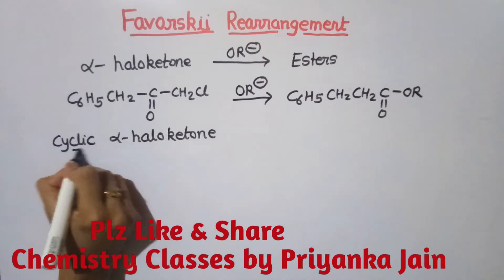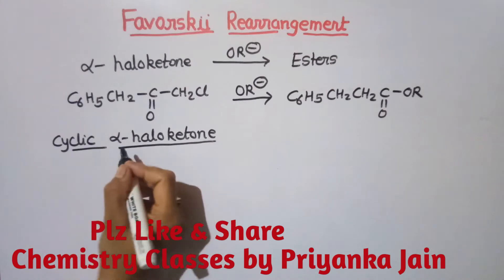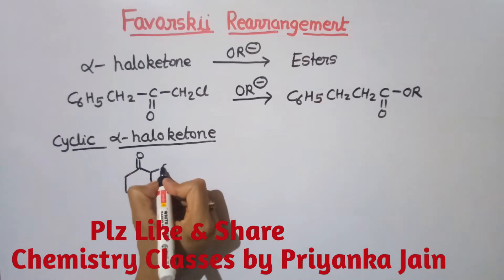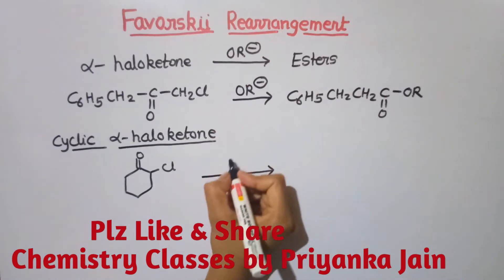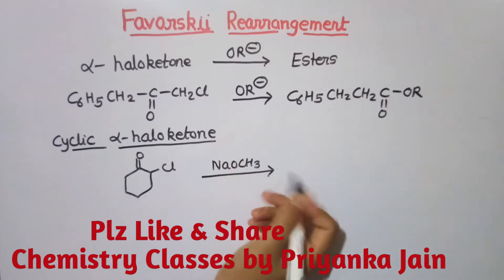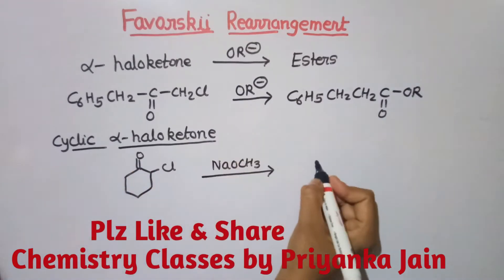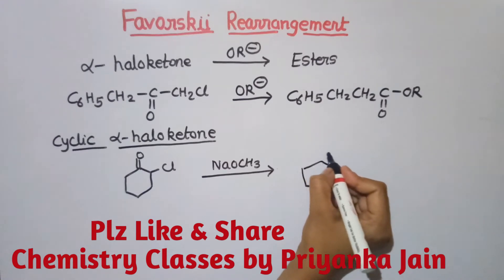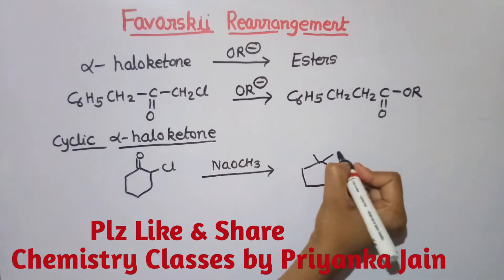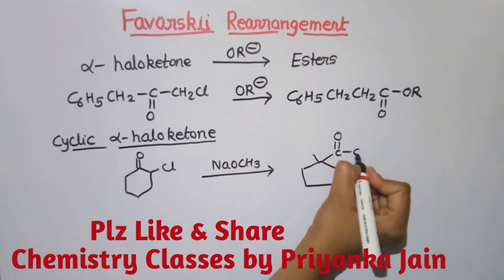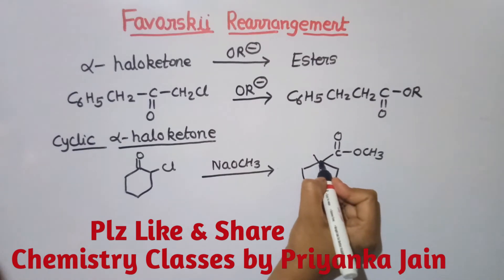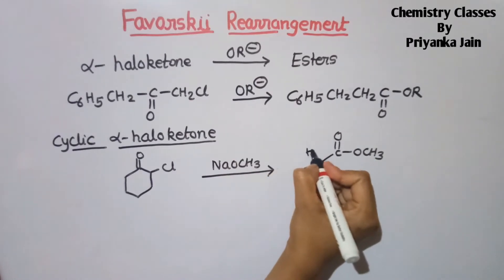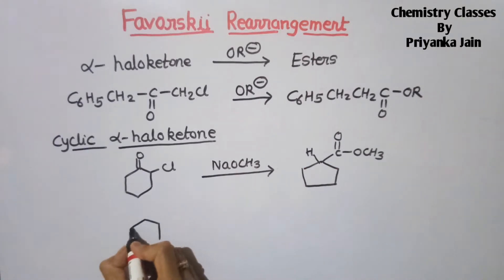This reaction is also given by cyclic alpha haloketones, but in this case there will be ring contraction. For example, if we have a 6-membered ring ketone treated with NaOCH3, it will contract to a 5-membered ring and we get an ester with a 5-membered ring. The number of carbon atoms remains the same. One carbon atom is transferred, and this is the OCH3 group.